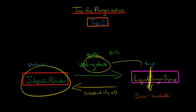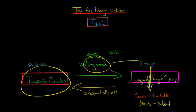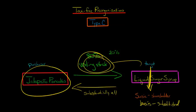In any case, Susie's basis — Susie's going to take a substituted basis in the new shares. Because she's getting rid of her Liquid Sugar Syrup shares when the company liquidates and distributes everything to Susie, she's going to have these new shares — the voting stock of Jalapeno Pancakes — and it's going to be a substituted basis. Whatever her basis was in her old shares, that's going to be her basis in the new shares.